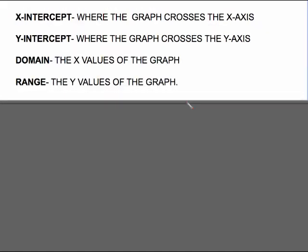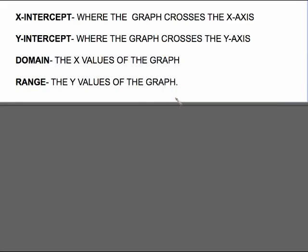Here's a couple more definitions we have to look at and use these definitions on the graphs coming up. The x-intercept is exactly what it sounds like. It is where the graph crosses the x-axis. The y-intercept is where the graph crosses the y-axis.